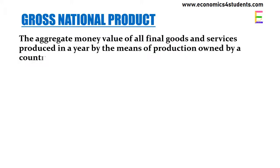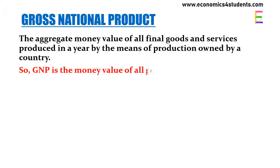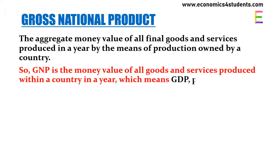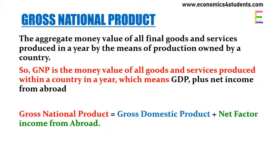Gross national product: it is the aggregate money value of all final goods and services produced in a year by the means of production owned by a country. GNP can be calculated from GDP — the aggregate money value of all final goods and services produced within a country in a year, including net income from abroad, is called gross national product. So if we add net income from abroad to GDP we get GNP.